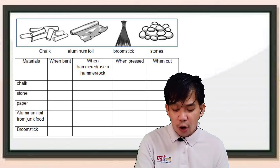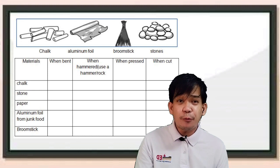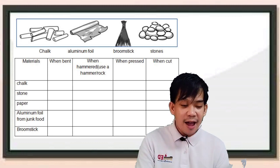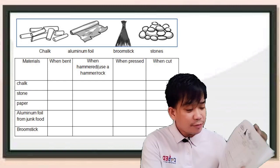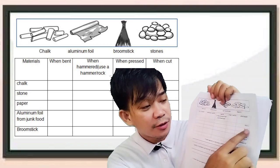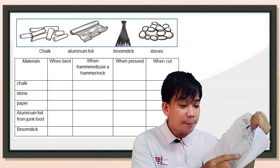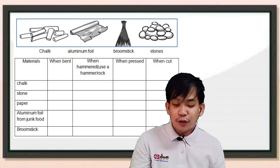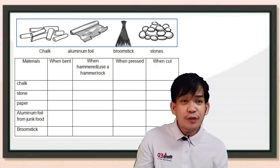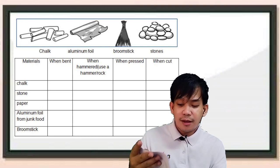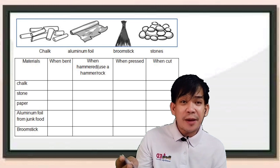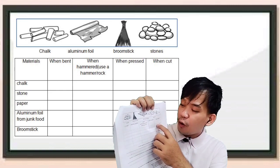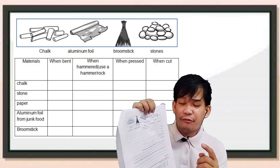So this is what you're going to do. If you have those materials, you can perform this simple activity. And after doing this, you have to write your answer in the table provided. The materials are: chalk, stone, paper, aluminum foil from junk food, and broomstick. You are going to try everything — each material you are going to change by bending it, by hammering it, by pressing it, or by cutting. And after doing it, you will write what happened to the material. For example, sa chalk — when you bent it, what happened? You will write it here — one word or two words is enough.